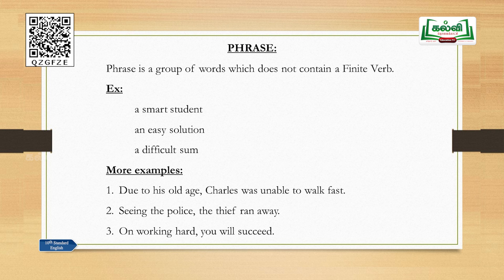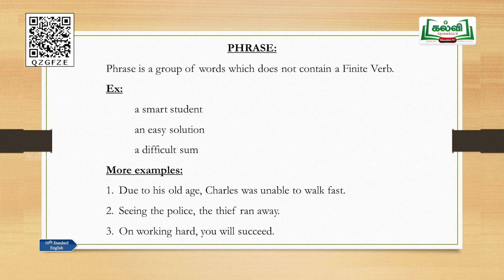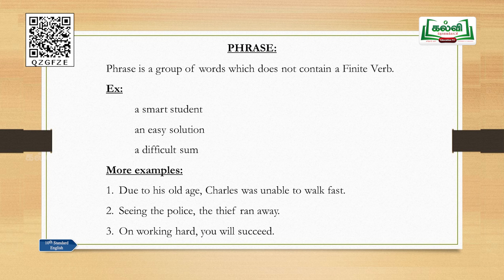More examples: 'Due to his old age, Charles was unable to walk fast.' This sentence has two parts. 'Due to his old age' has no finite verb — it is a phrase. 'Charles was unable to walk fast' has finite verb 'was' — that is a clause. Next: 'Seeing the police, the thief ran away.' 'Seeing the police' has only a non-finite verb 'seeing' and no finite verb — it is a phrase. 'The thief ran away' has finite verb 'ran' — that is a clause.